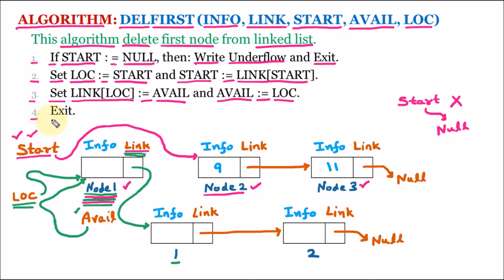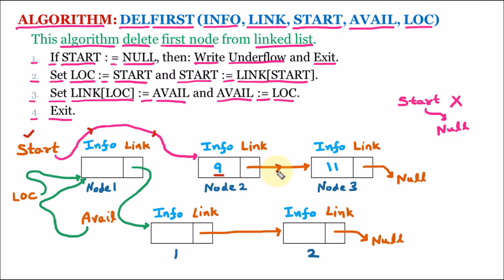In line 4 we exit from the algorithm. Now if we traverse the linked list, start contains the address of node 2, so it will access the value 9, then go to node 3 with value 11, and reach the end. So the linked list now contains only two nodes: 9 and 11. As for the available list, the avail pointer now contains the address of node 1, meaning node 1 has been added to the available list, and we now have three free nodes in total.